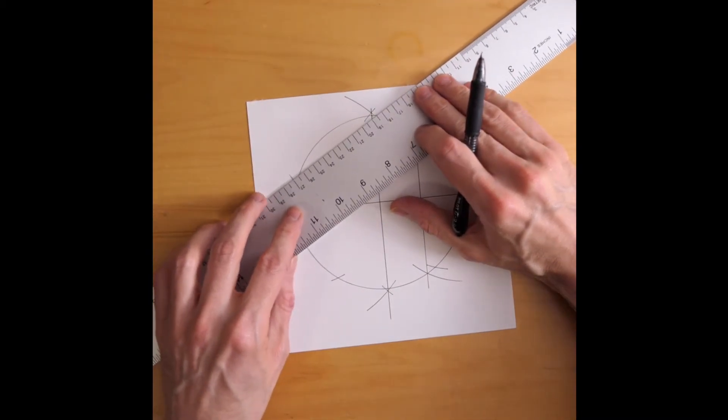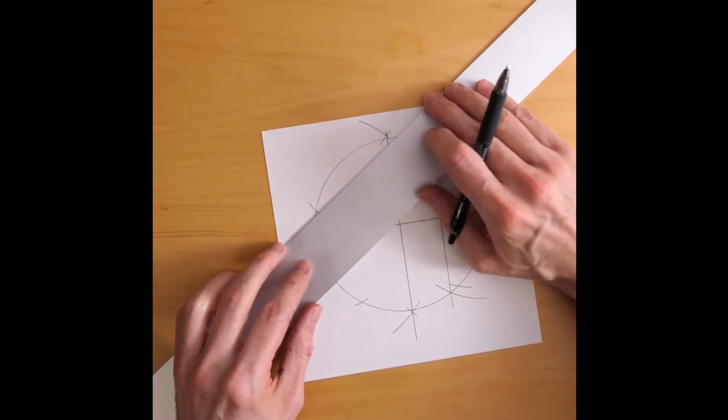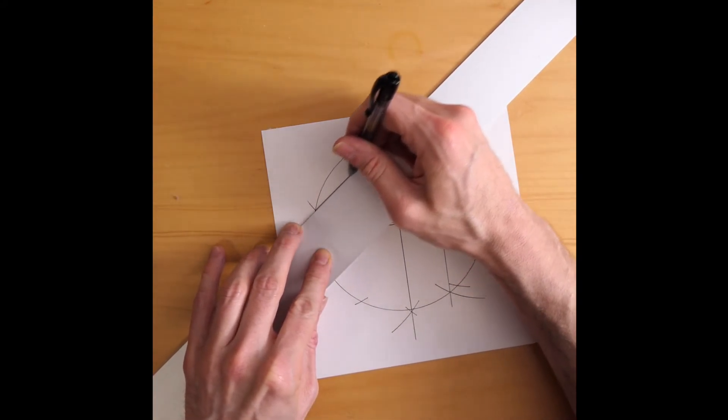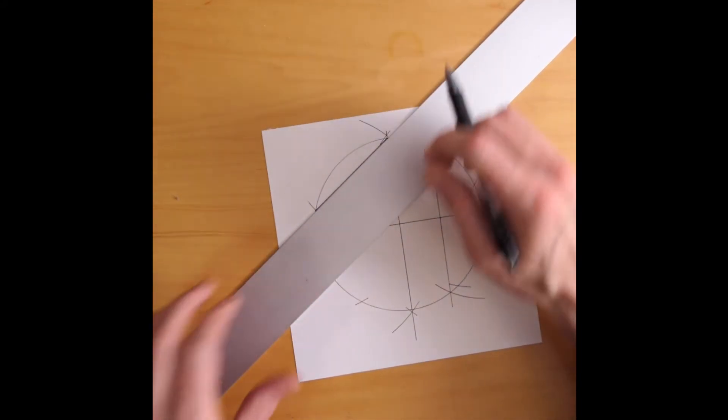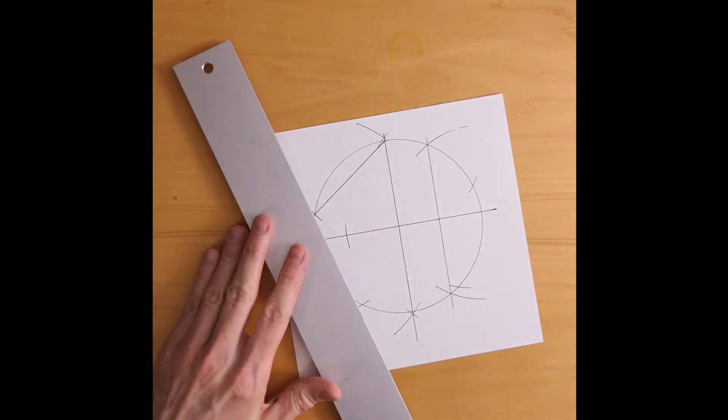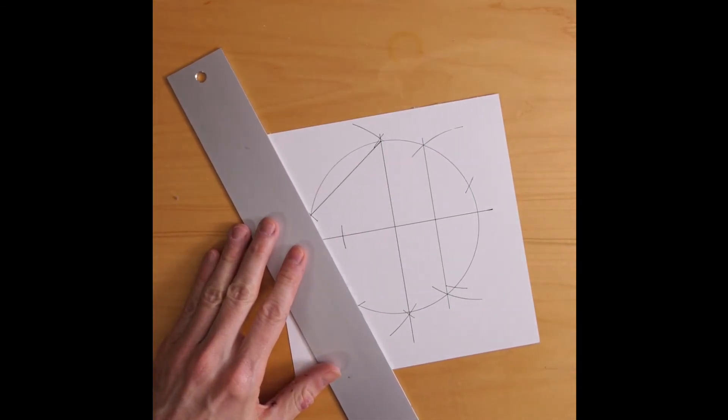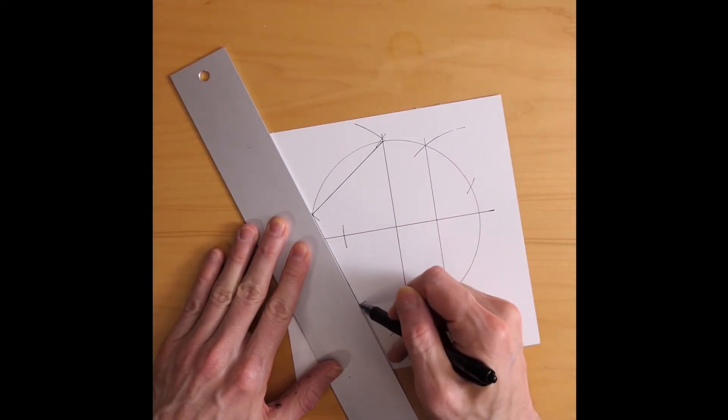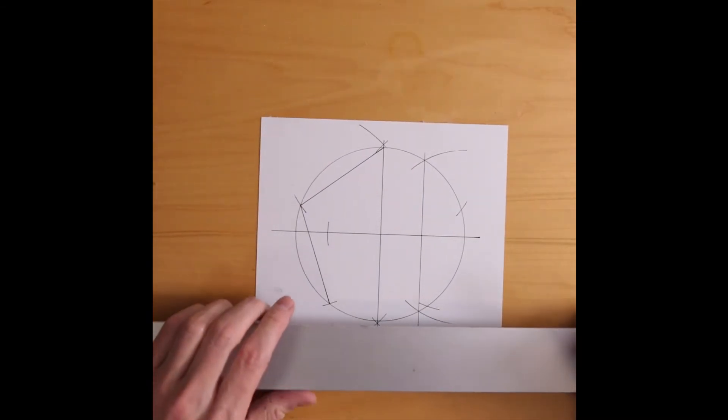And now I can draw in the lines of the pentagon. One goes from the top of the circle to this point here. So that's number one. Continuing around the circle, here's line number two. Try to get that nice and lined up. Across the bottom, once again, make sure I pick the right arc.